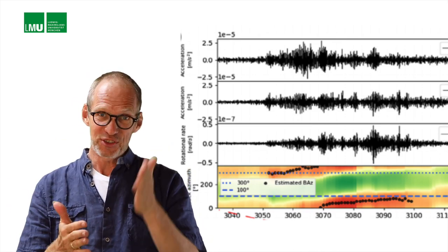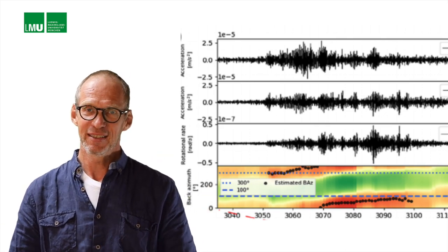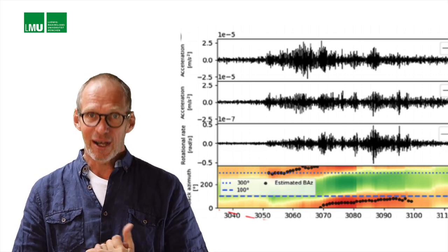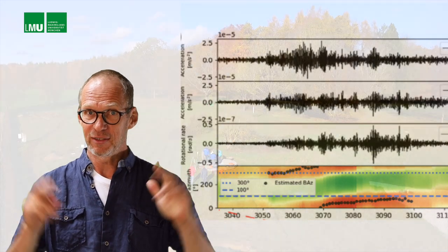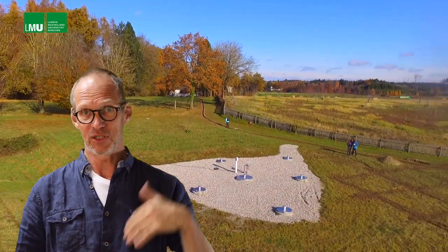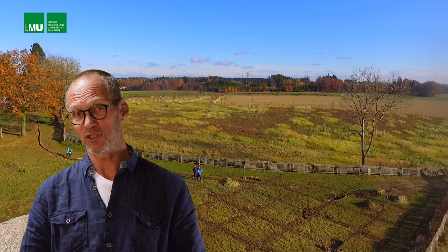Now, if one tracks the energy back, and you can see this in the picture here, it actually turned out it must be cars going along the street that's called B2, which is only a couple of hundred meters away from the ROMI ring laser and the co-located broadband stations.